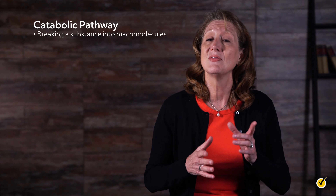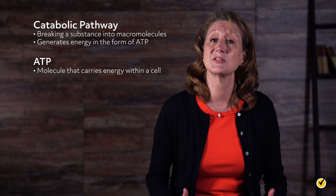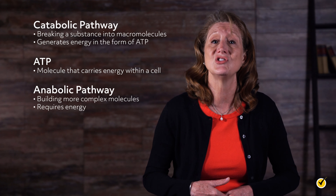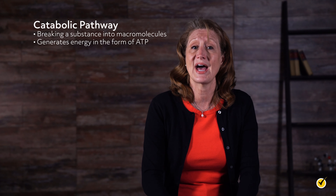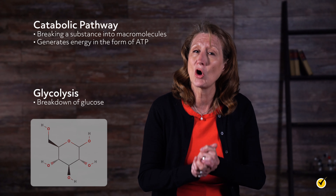Metabolism comes from the Greek root that means change. Our bodies change food into usable energy for our cells. But we eat all kinds of food that contain all kinds of nutrients, so how do our bodies know how to break everything down? There are two pathways our body uses to metabolize nutrients. If our body breaks down a substance into macromolecules, we consider it a catabolic pathway. This process releases energy in the form of ATP. If our body builds up more complex molecules from other simpler precursors, we consider it an anabolic pathway, which requires energy to complete. Today we are going to talk about a specific type of catabolic reaction called glycolysis.